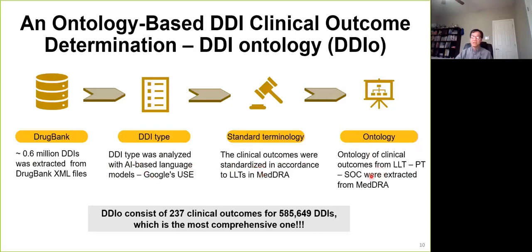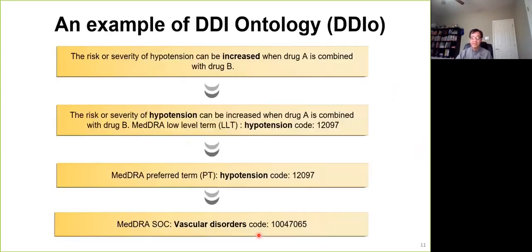Then for each drug-drug interaction type, we use MedDRA coding to code their clinical outcome. And then in the last step, we fully take advantage of the MedDRA coding hierarchical structures to get their low-level term, PT term, and the system organ class term to organize the DDI ontology. Consequently, we get the DDIO consisting of 237 clinical outcomes for around 0.6 million drug-drug interaction pairs. For our best knowledge, which is the most comprehensive one in public.